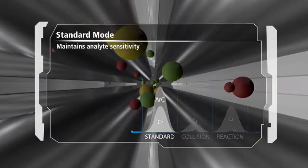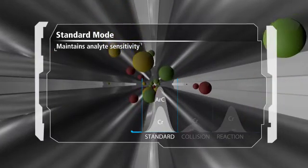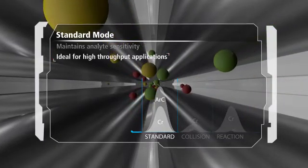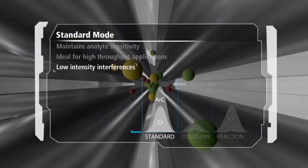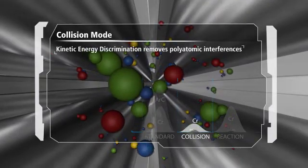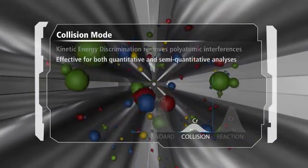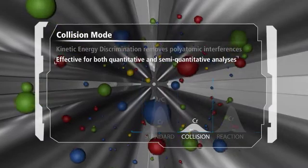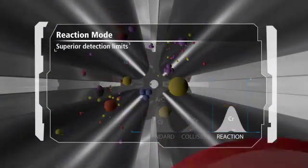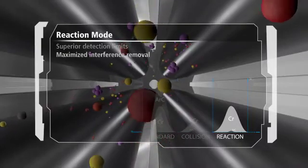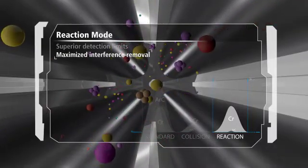For simple matrices and samples with minimal interferences, select standard mode. Here, the cell gas is turned off and the system operates like a non-cell instrument for normal sensitivity. Easily switch the instrument to collision mode to remove polyatomic and unknown interferences. For applications that require superior interference reduction and uncompromising performance, Nexion 2000's reaction mode truly delivers.